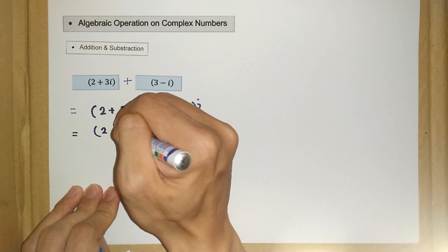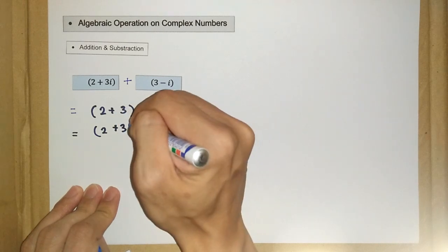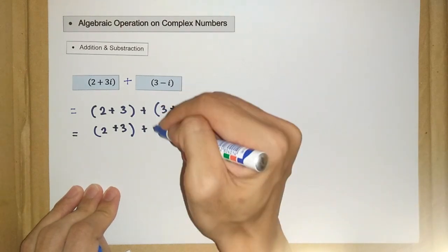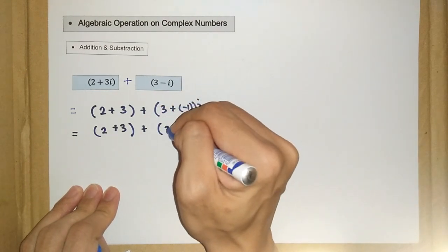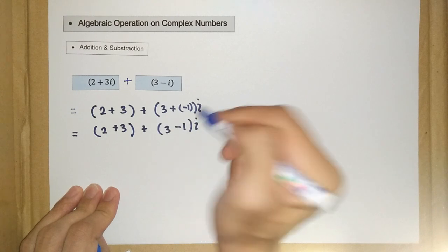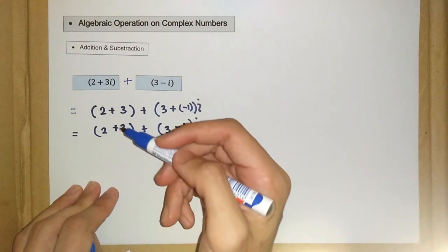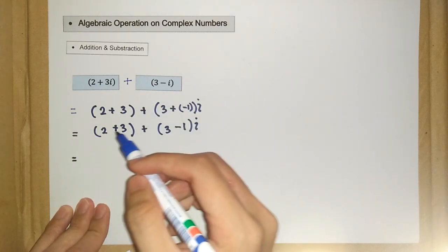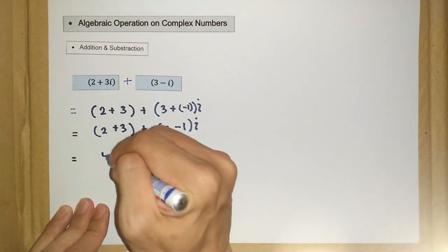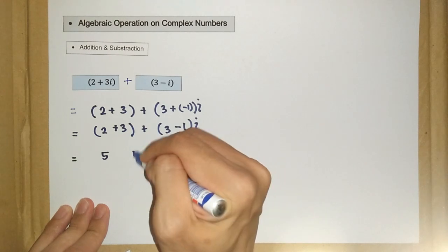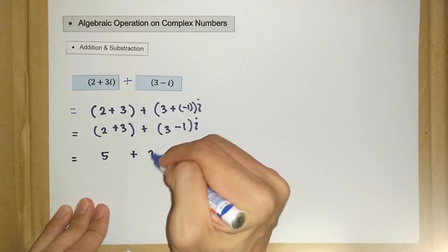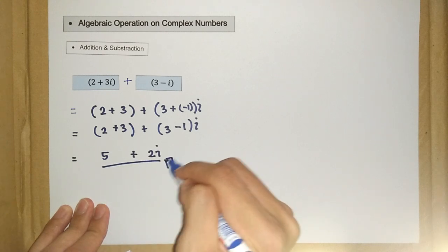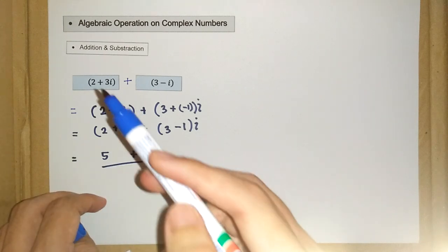We have 2 plus 3 for the real part plus 3 minus 1i. So let's solve this. We have 2 plus 3 is 5, plus 3 minus 1 is 2i. So this is the answer for this addition: 5 plus 2i.